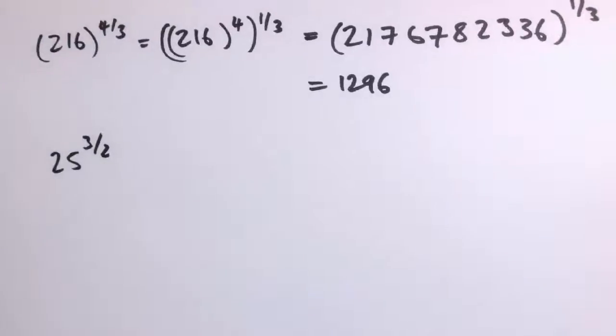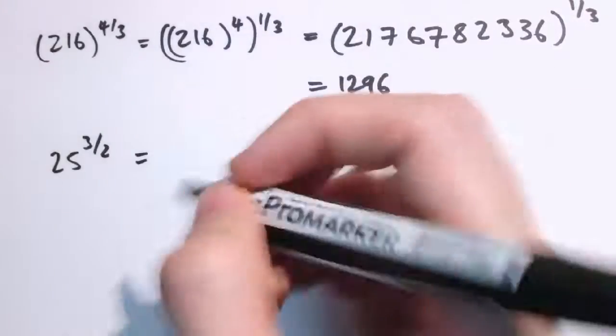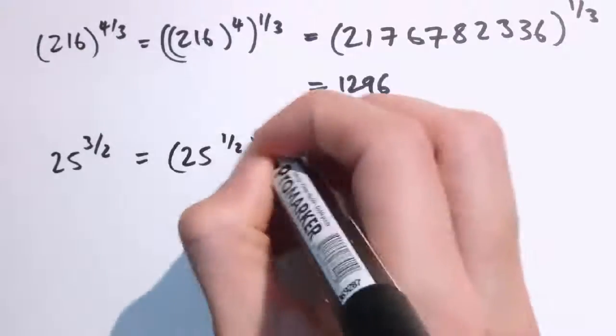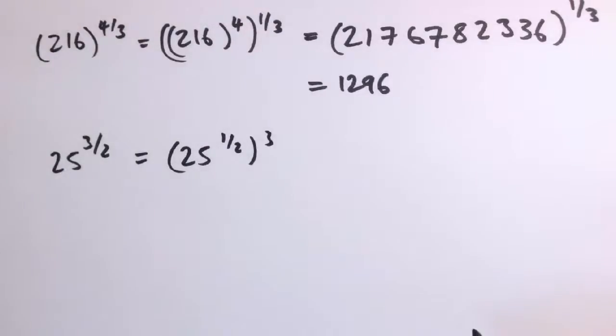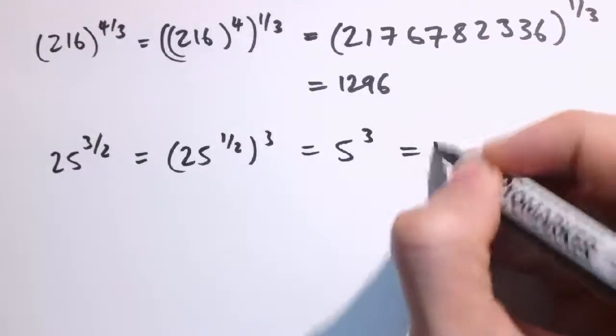So another example like that, 25 to the 3 over 2. Well I could write that either as 25 cubed to the half or, to keep it simple, we'll do it as 25 to the 1 half cubed, because 25 to the 1 half is the square root of 25, so that's 5 cubed, which is 125.